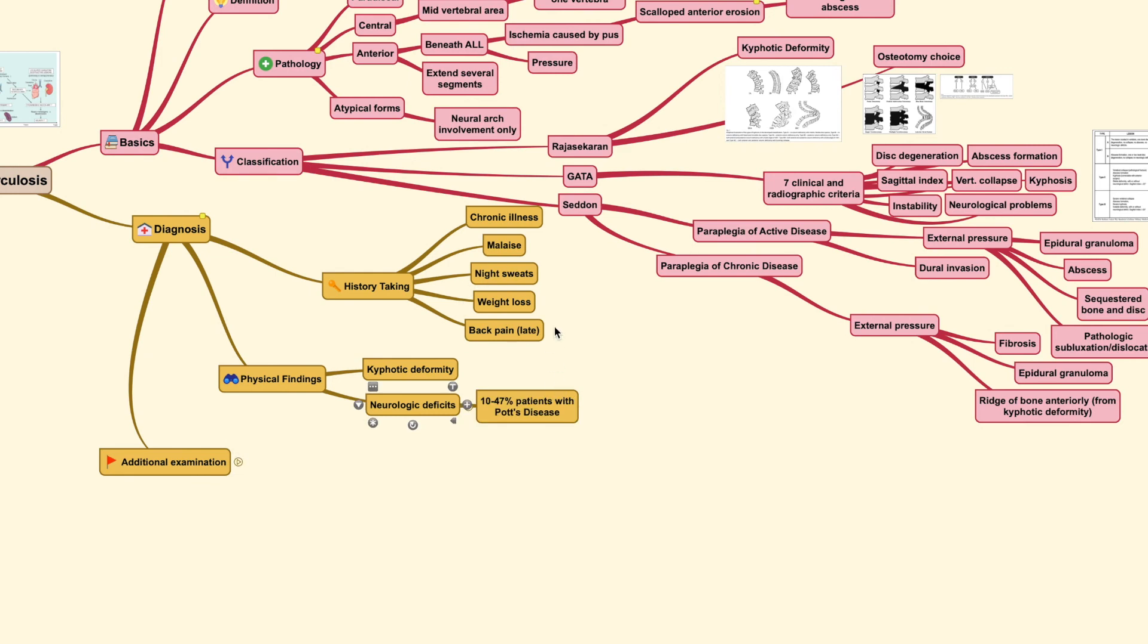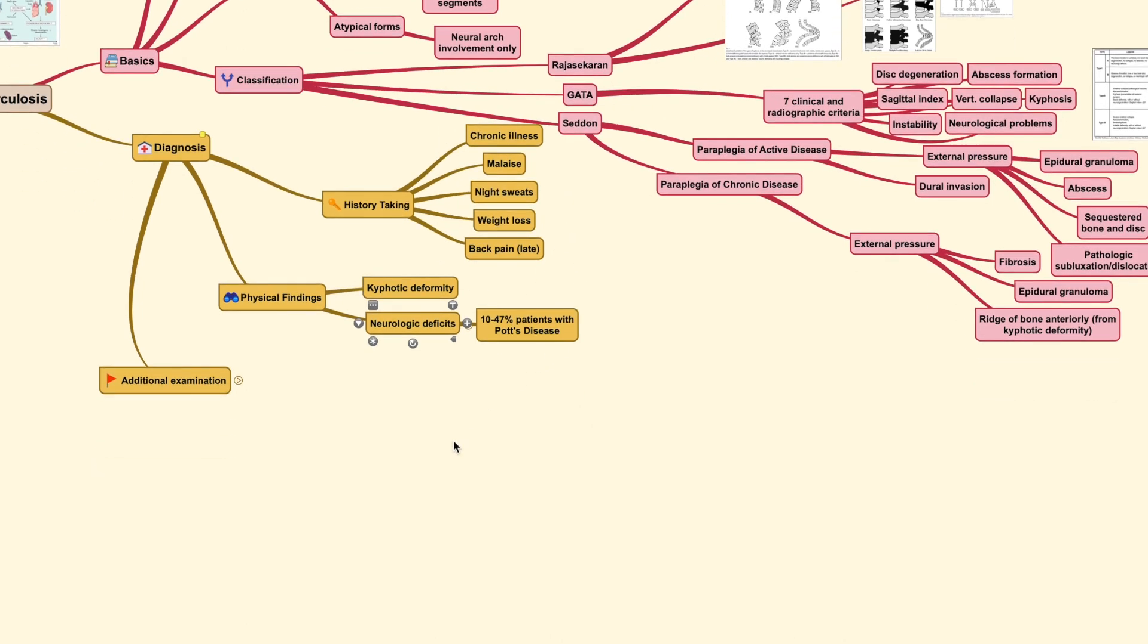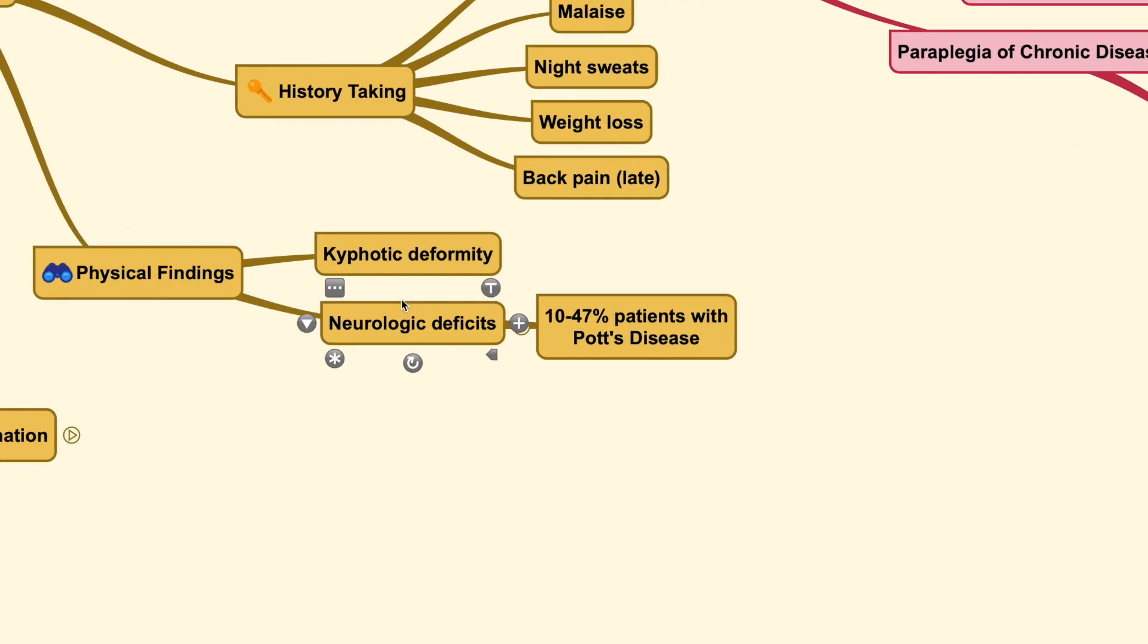For the history taking, you generally will find chronic illness, malaise, night sweats, weight loss or even back pain in late cases. And these are all usually associated with any sorts of chronic infection.